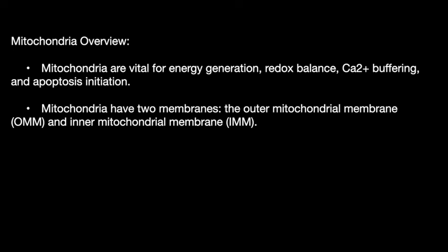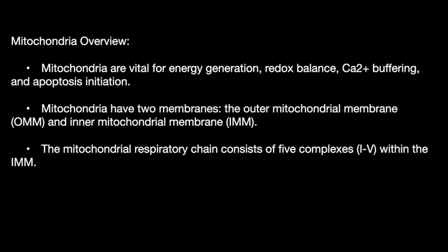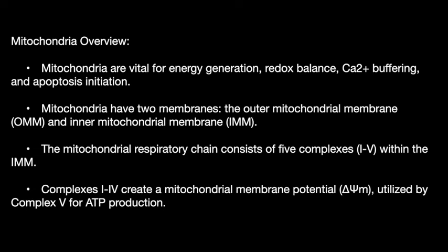Mitochondria has two membranes: the outer mitochondrial membrane and the inner mitochondrial membrane. The mitochondrial respiratory chain consists of 5 complexes — complexes 1 through 5 — within the inner mitochondrial membrane. Complexes 1 through 4 create a mitochondrial membrane potential which is utilized by complex 5 for energy generation.